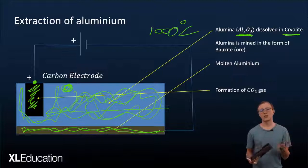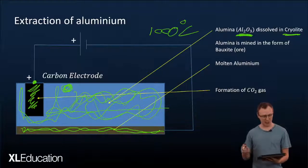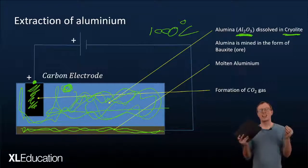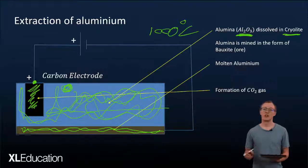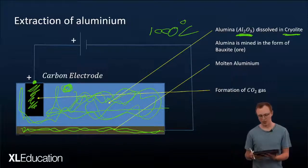Now the extraction of aluminium is actually quite taxing on the environment because this particular reaction and the scale at which we do it takes a huge amount of energy. Massive amounts of energy to the extent that a lot of aluminium plants in the world actually have their own power stations. Literally their own power stations just to run that aluminium plant.